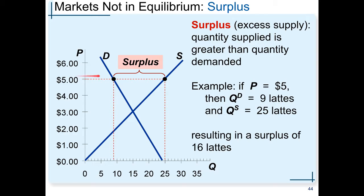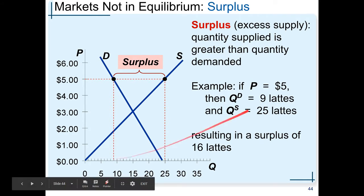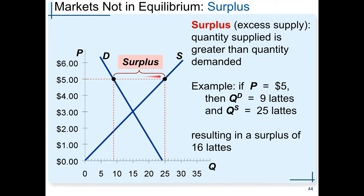At $5, consumers' demand for lettuce is equal to 9. But suppliers think price is so good. Farmers of lettuce harvested a lot of lettuce from their farm, and they want to sell 25 lettuce.